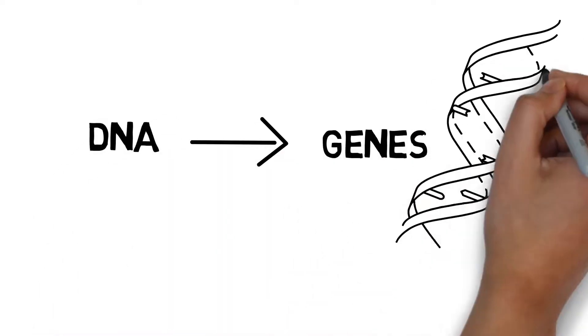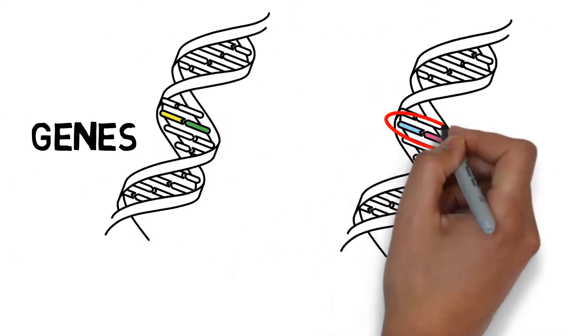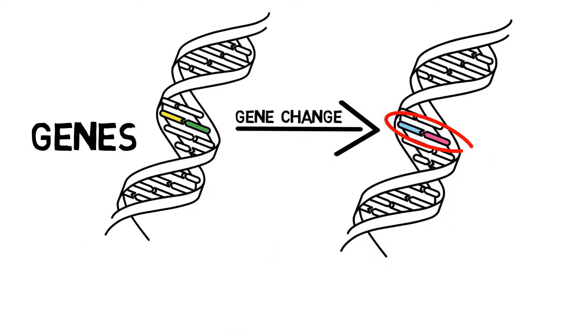Our DNA contains thousands of genes, which need to contain the right code, or information, to work properly. When the code in a particular gene is changed, this can alter how the gene works and, for example, impact how we may process certain medications. A gene change like this is called a variant.